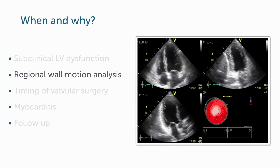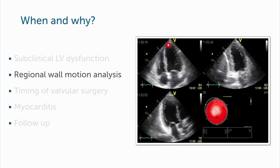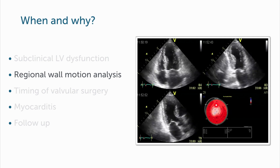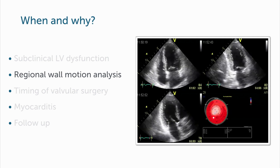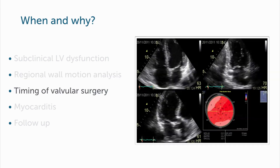To look at regional wall motion abnormalities: a patient with an anterior infarct — look how nicely you see the defect here in the apex in the bullseye display.